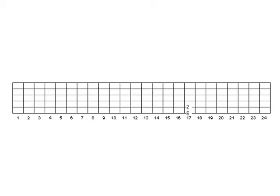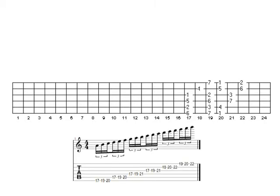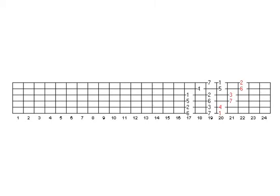Three-note-per-string pattern six starts on the sixth of the scale — in this case A, seventeenth fret. This entire pattern consists of perfect fourth shapes, with the exception of one augmented fourth shape. Here's the interval structure information, the notes, and going from pattern five to pattern six, this is all you needed to learn.